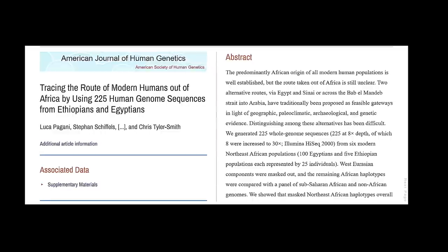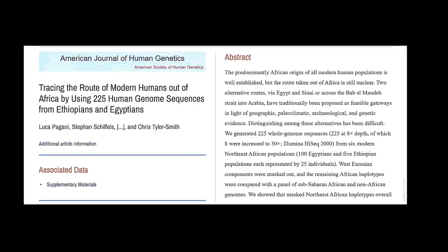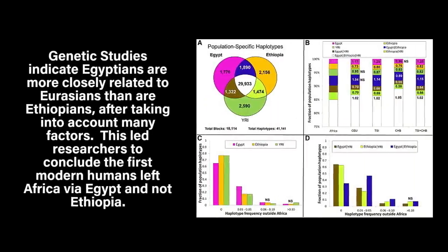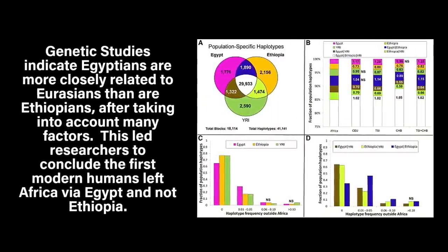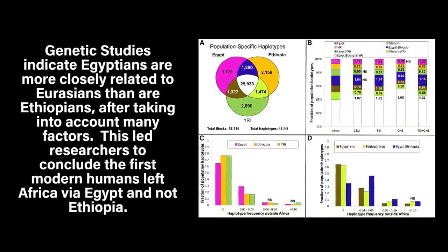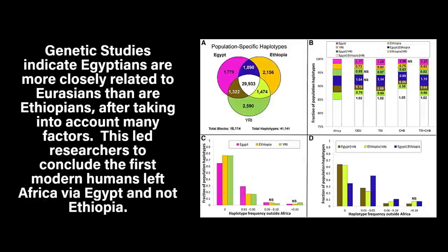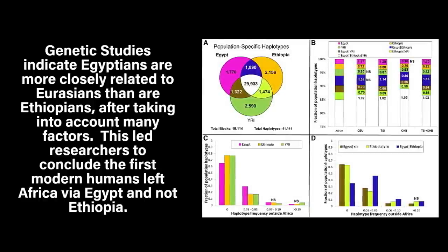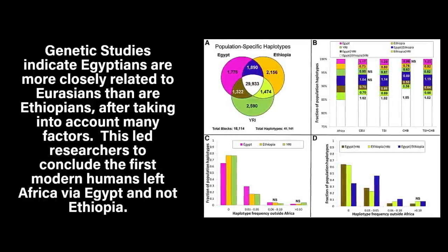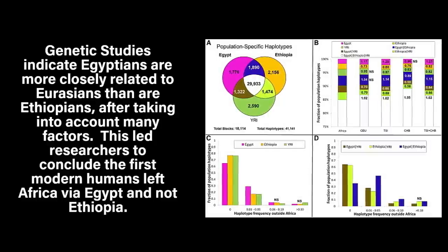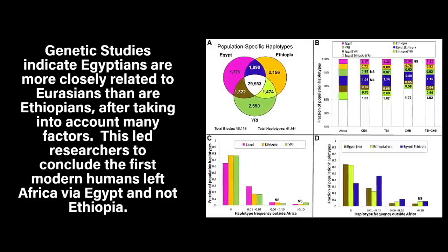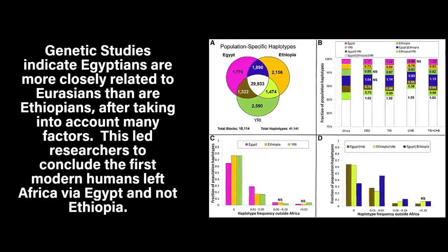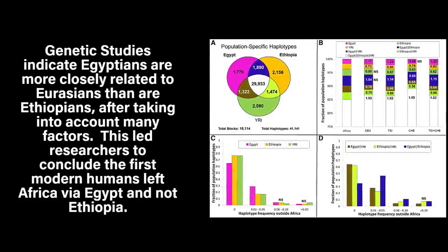Fossils from locations like Omo and Herto in Ethiopia suggest that our species originated in Africa some 200,000 years ago. However, the populations these fossils represent did not start acting truly modern until later, despite the fact that they appear modern. In terms of toolmaking, the Emeran Toolkit, which dates to roughly 50,000 years ago, marks the change between prehistoric and contemporary human behavior.